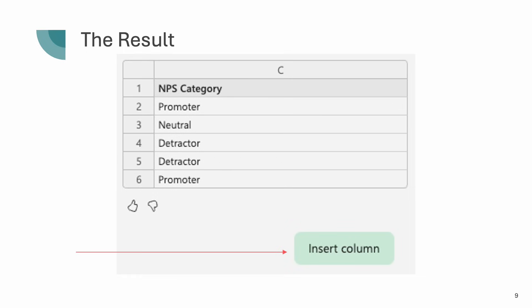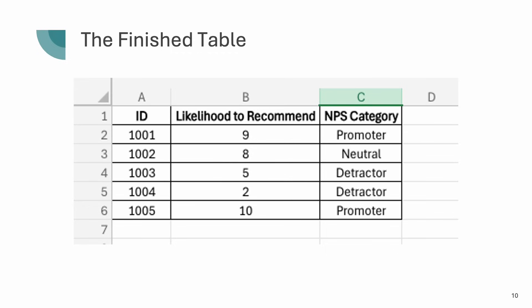Then it shows me the result — it's going to generate promoter, neutral, detractor, detractor, promoter — and it gives me the option to insert the column. So I click on insert the column and there we have, back in the original table, the answers that we would expect to see for the data.